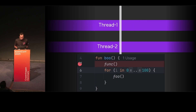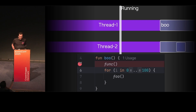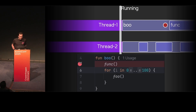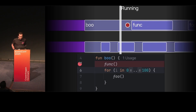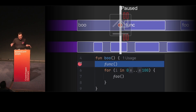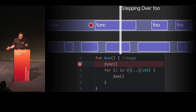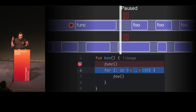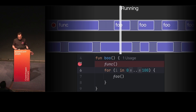Now let's move to a several-thread case. In this example, function boo will be executed in thread number one. The default behavior is that we pause all threads when we hit a breakpoint. When you press step over, we resume all threads; when stepping is over, we again pause all threads, then resume.